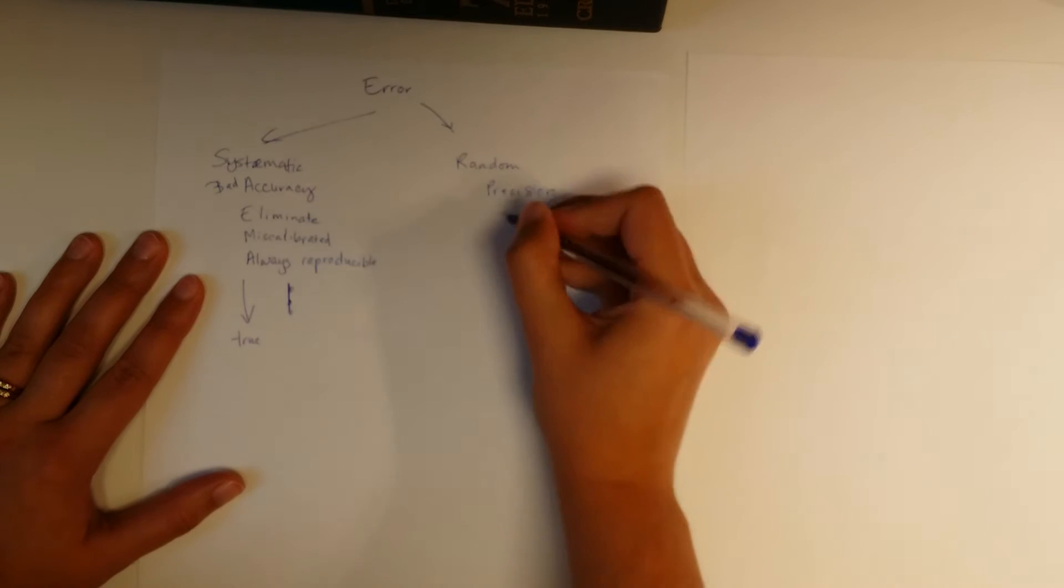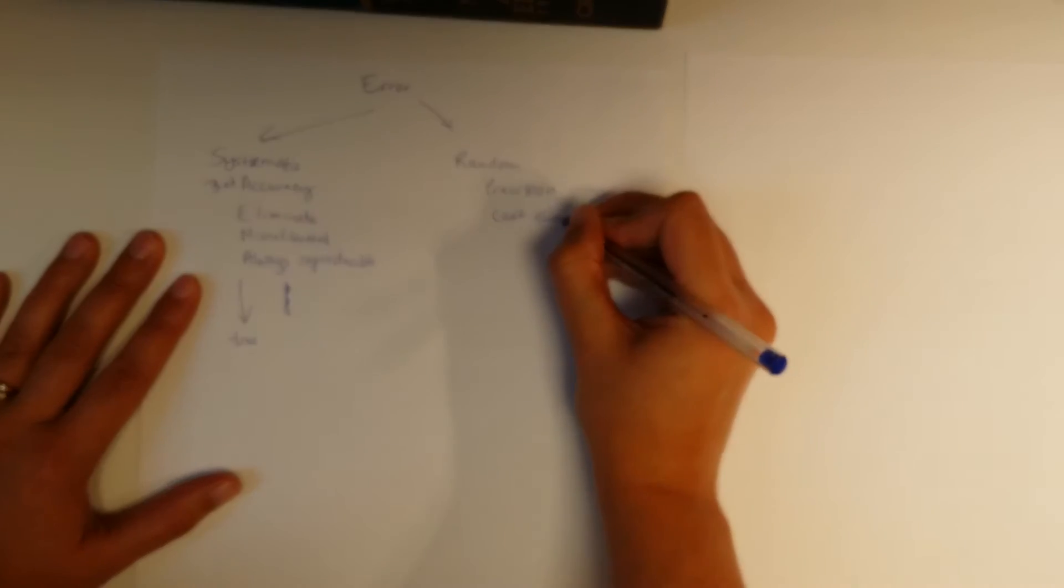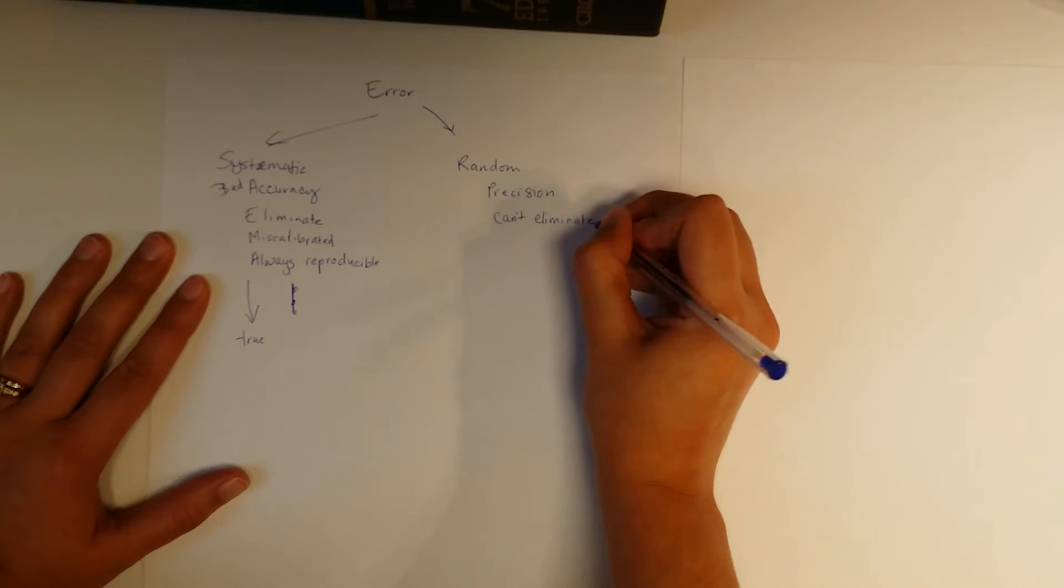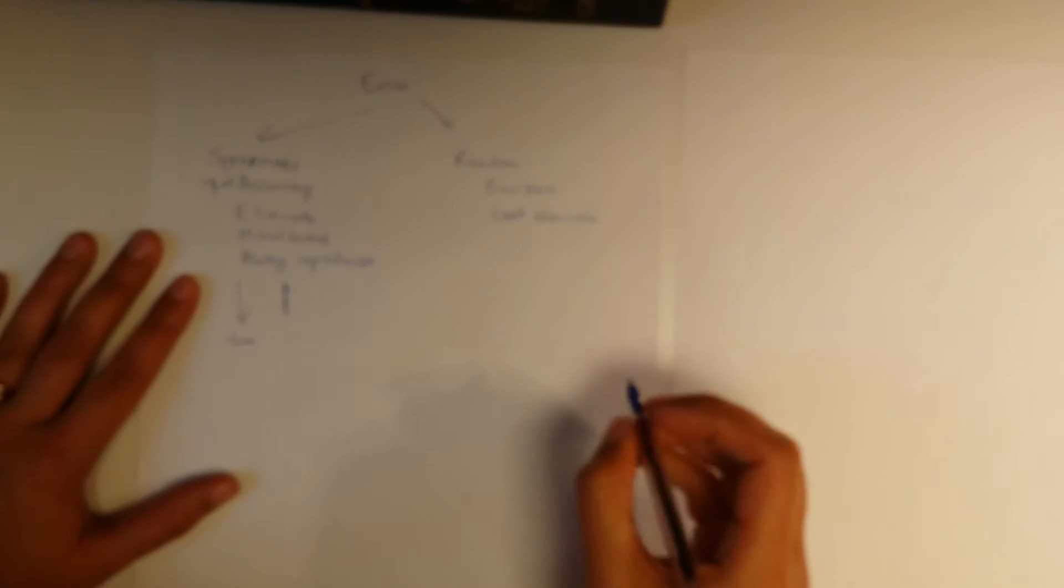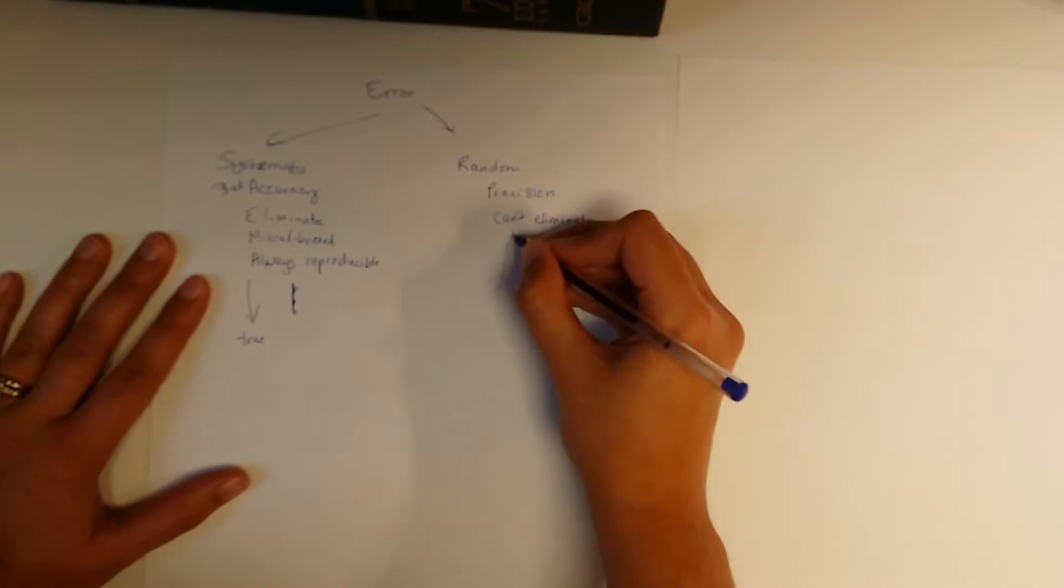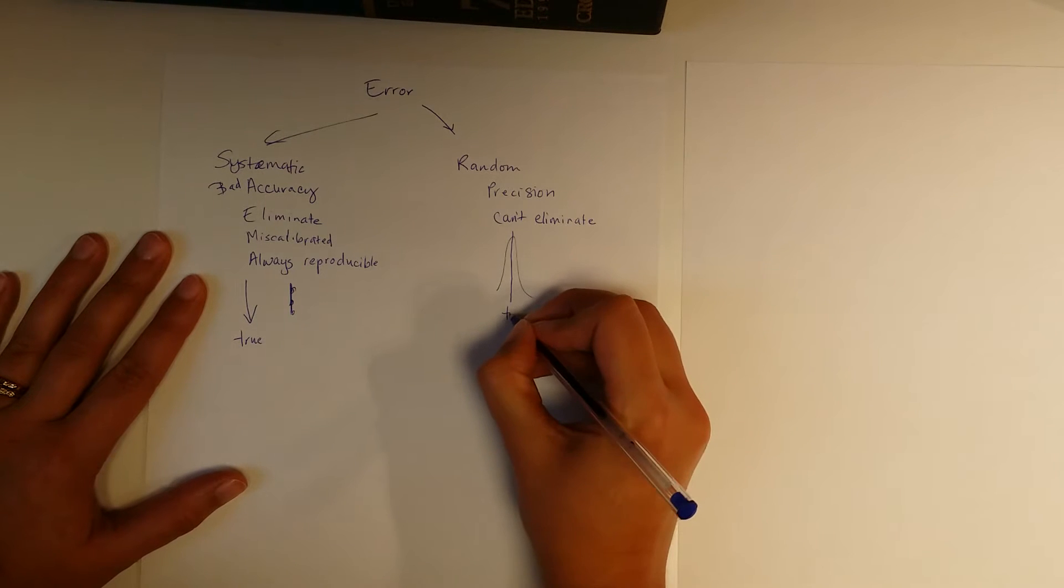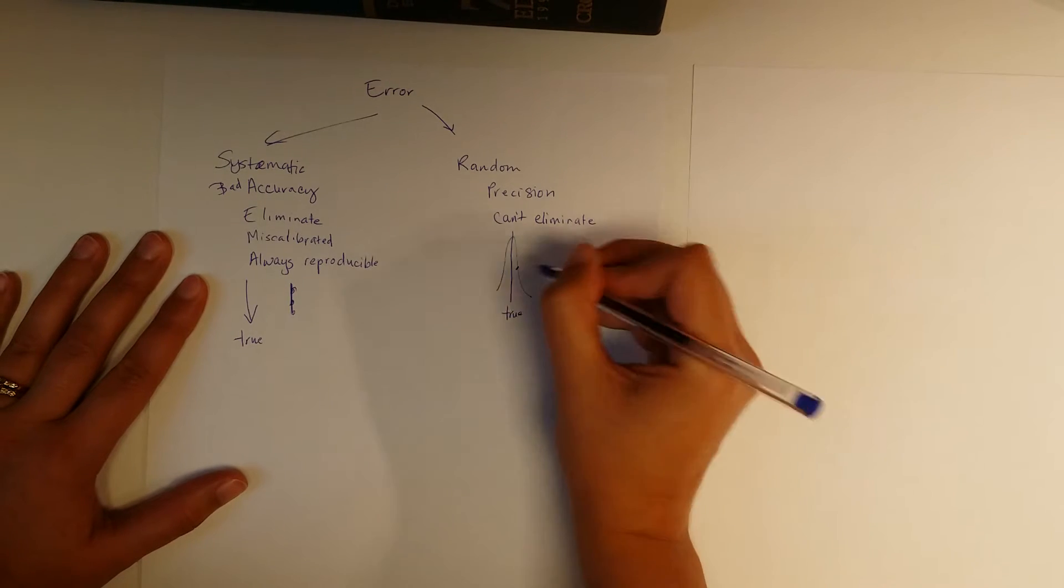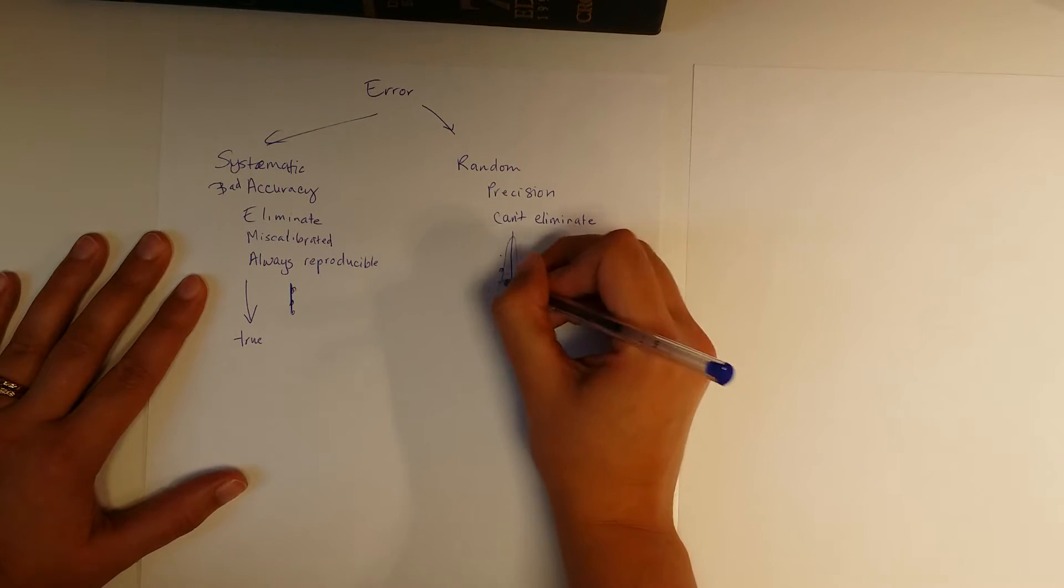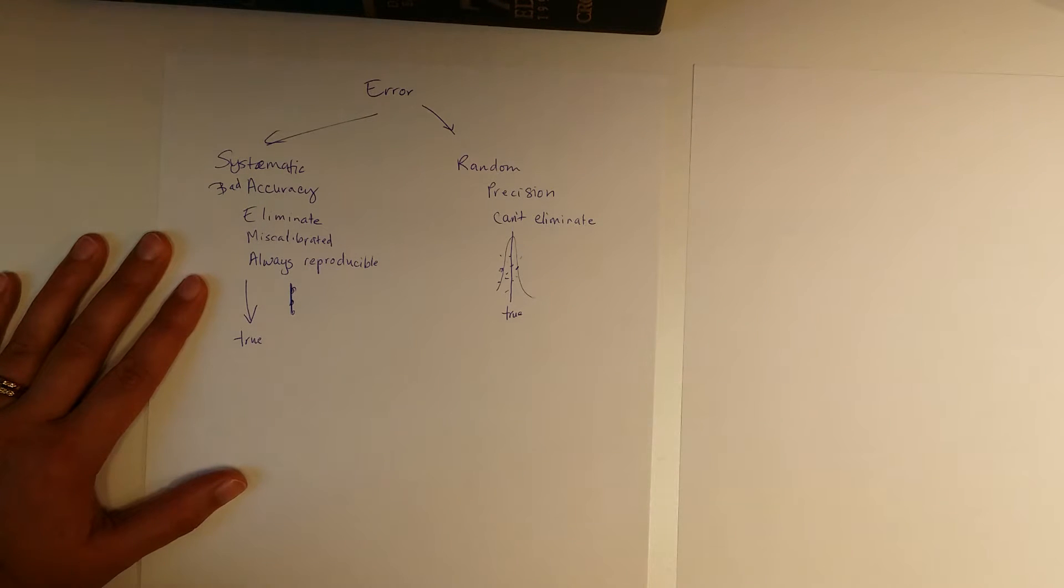Random error affects precision. You can't eliminate it unfortunately. You can try to minimize it by careful work but you can never get rid of it entirely. This simply comes from the chance that sometimes you're gonna be a little bit high or a little bit low. So it's usually a Gaussian distribution and if our true value is here sometimes you're gonna be high sometimes you'll be low and you end up building up this random statistical value around it.